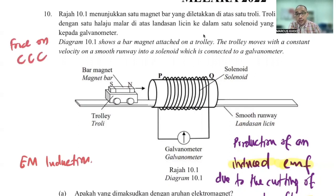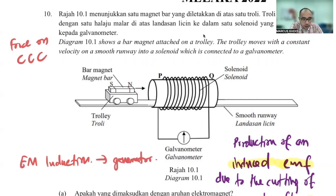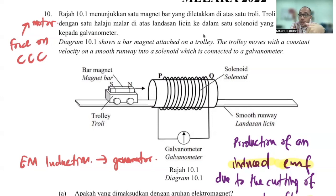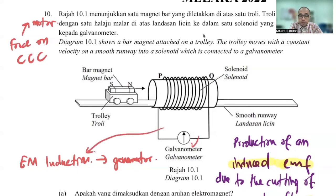When you talk about electromagnetic induction, you're talking about a generator — that is the main application. The force on the current-carrying conductor's main application is the motor, because you want to produce a force. The main difference: ask yourself, is there a power supply in the circuit? If there is no battery — like in this case where all you see is a galvanometer — it is most likely electromagnetic induction. For the force on a current-carrying conductor, there has to be a battery. With EM induction there is no battery, because you are producing the current, not providing it.